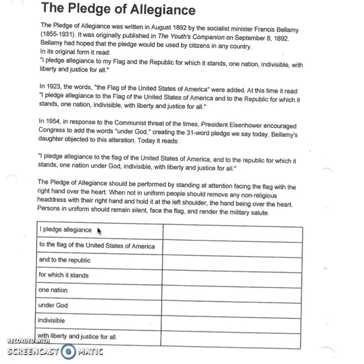Now we're going to do a line-by-line analysis of the Pledge of Allegiance. I'd like you to try, in your own words, to tell me what each line means. You can pause the video, and after you're done you can continue playing. See if you can explain each of the lines, some of the lines, or even just one of the lines. Then continue with the video and you'll hear me go line by line explaining what these words mean. Pause the video now.